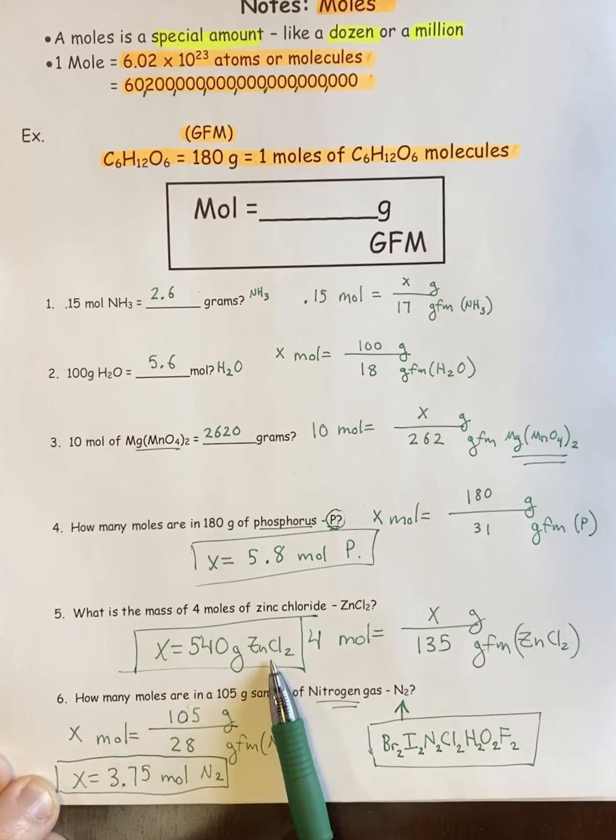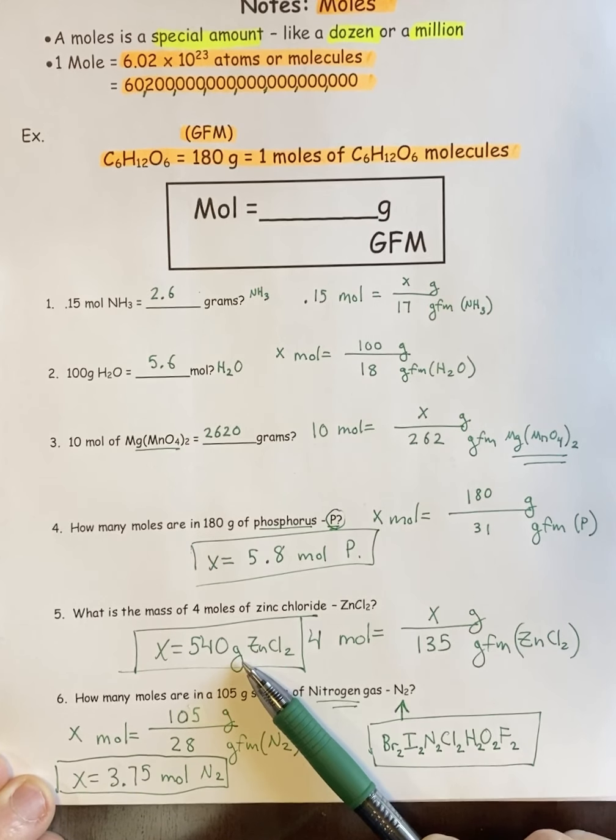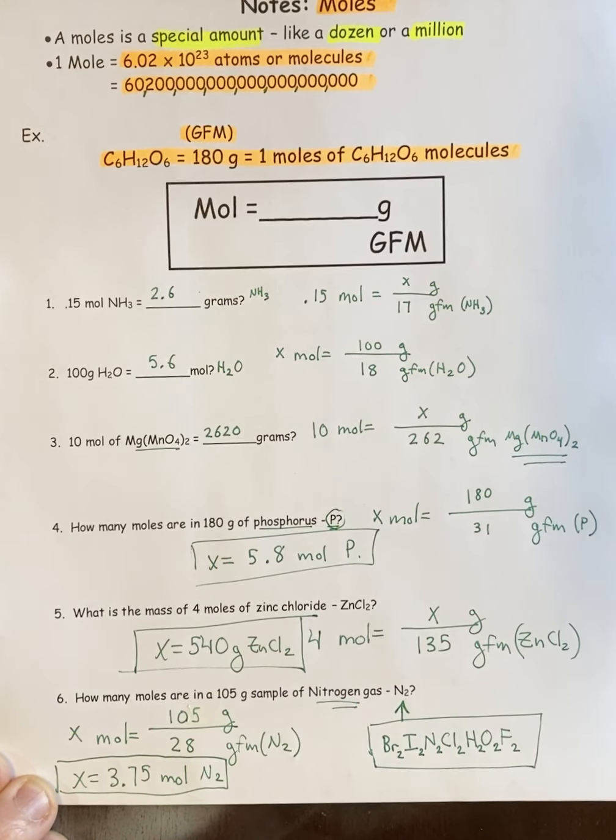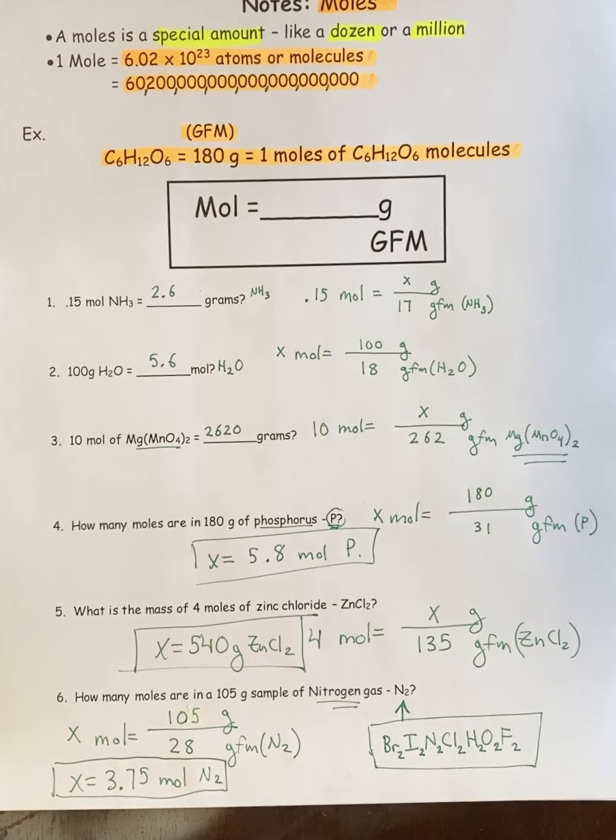Notice how I'm labeling my answers. With these bottom three problems, you'd want to know what this is because if you just say 540 grams, the person grading it would say, 540 grams of what? There could be multiple chemicals in a single equation. If you don't specify what you're talking about, they could mark it wrong. But this concludes the mole formula. There will be a Castle Learning on this up tonight.